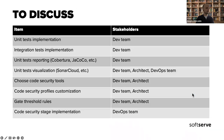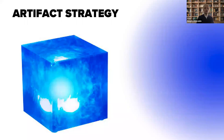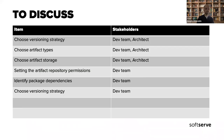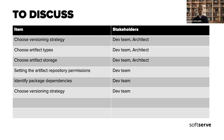For the artifact strategy — what kind of artifacts to use — we need to resolve questions like: what versioning scheme to use to store the artifact, what artifact types we need, and what artifact storage we'll use. It could be a third-party storage like Nexus or Artifactory, or something else. We also need to define what permissions the dev team will have and identify package dependencies.